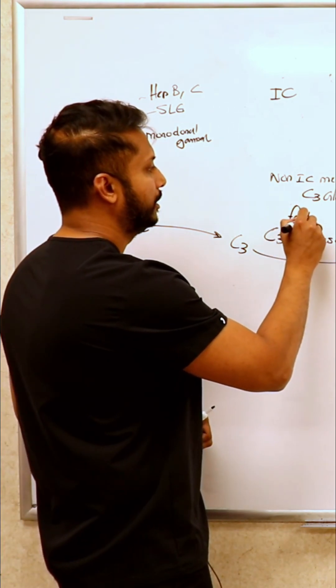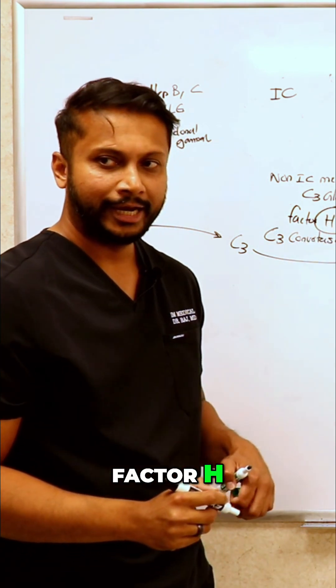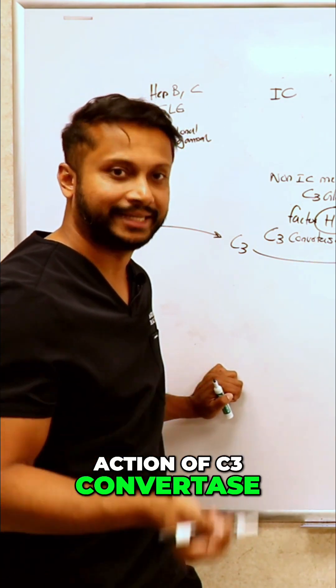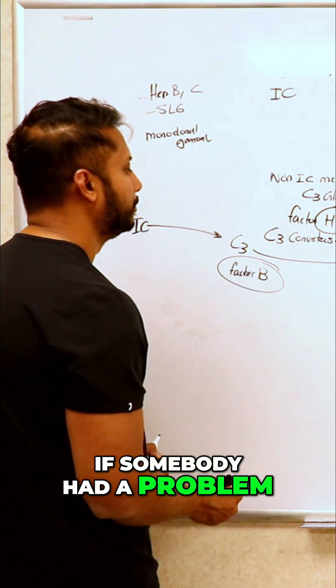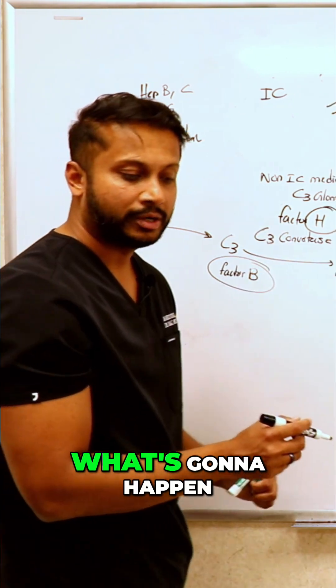Factor H blocks off the action of C3 converters. So for instance, if somebody had a problem with factor B or factor H, what's going to happen to your C3 converters?